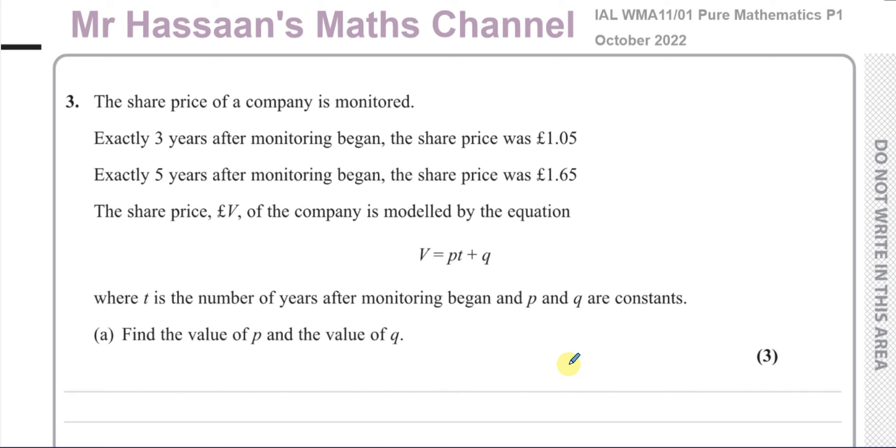This question here is about simultaneous equations. It says the share price of a company is monitored. Exactly three years after monitoring began, the share price was £1.05. Exactly five years after monitoring began, the share price was £1.65. The share price in pounds, which is given by the symbol V of the company, is modeled by the equation V equals PT plus Q, where T is the number of years after monitoring began, and P and Q are constants.